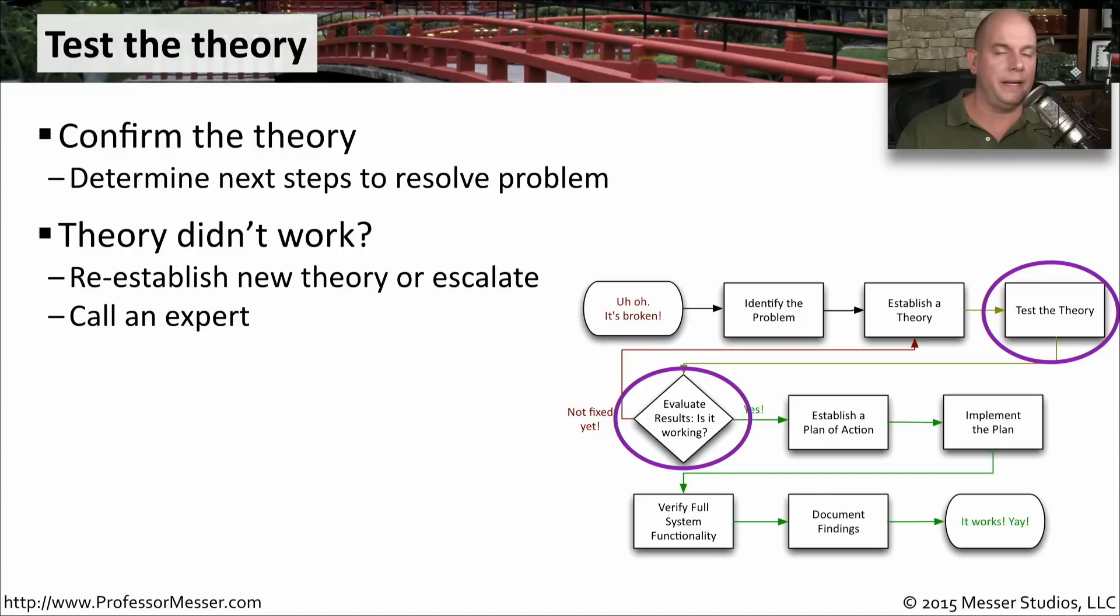If it didn't work, then we need to try the next theory on our list, or we may need to go back to the drawing board and come up with a completely different list of theories that might be associated with this issue. This might also be the point in the troubleshooting process where we bring in additional help. Now that we've collected all of the information, we can provide that to an expert who might give us some more ideas about how we might resolve this issue.